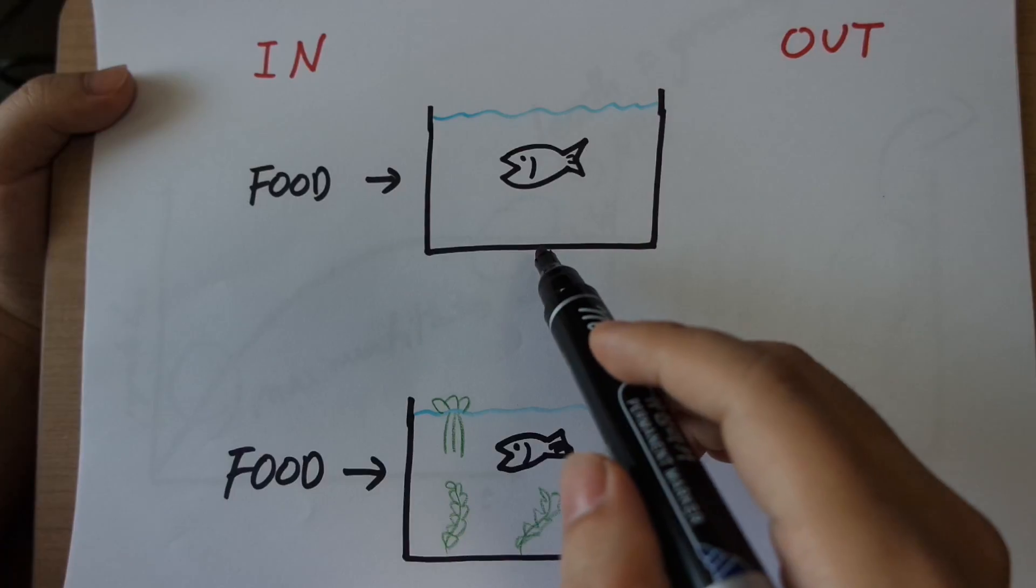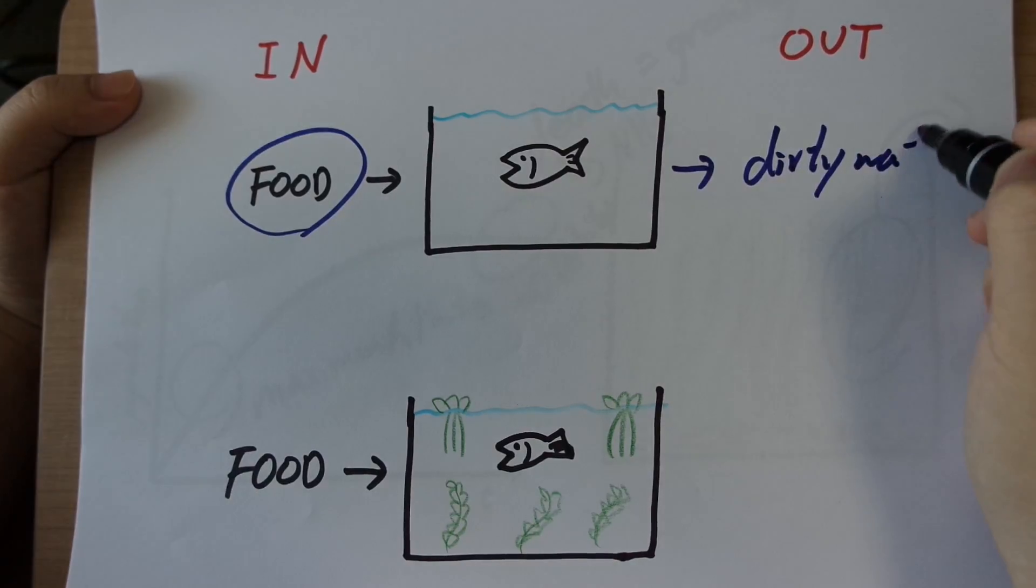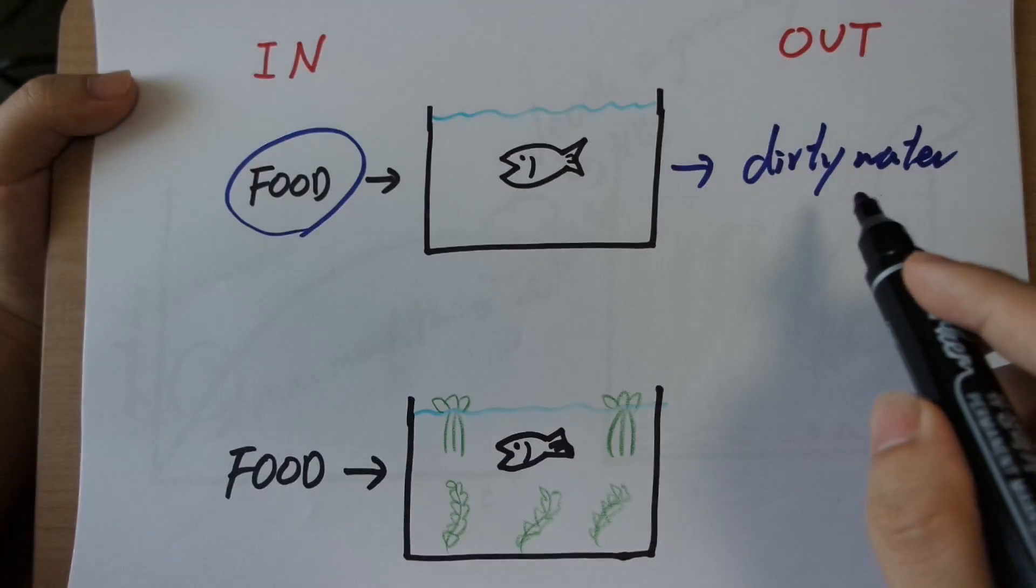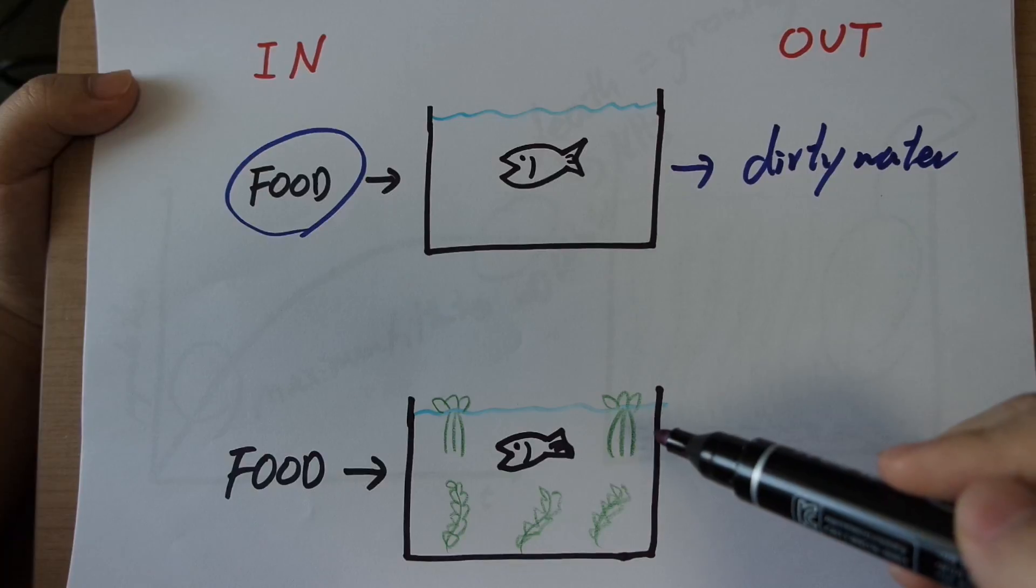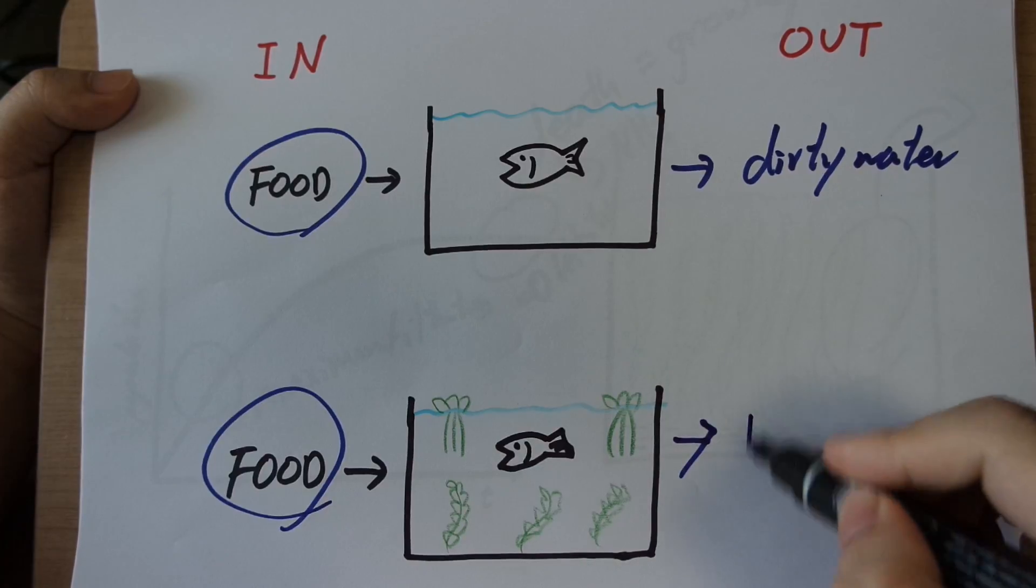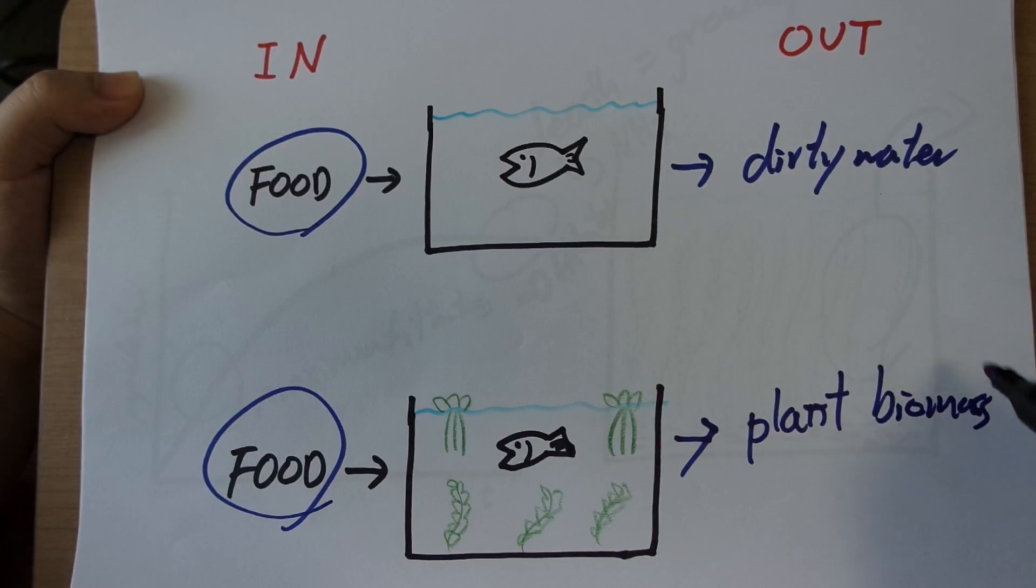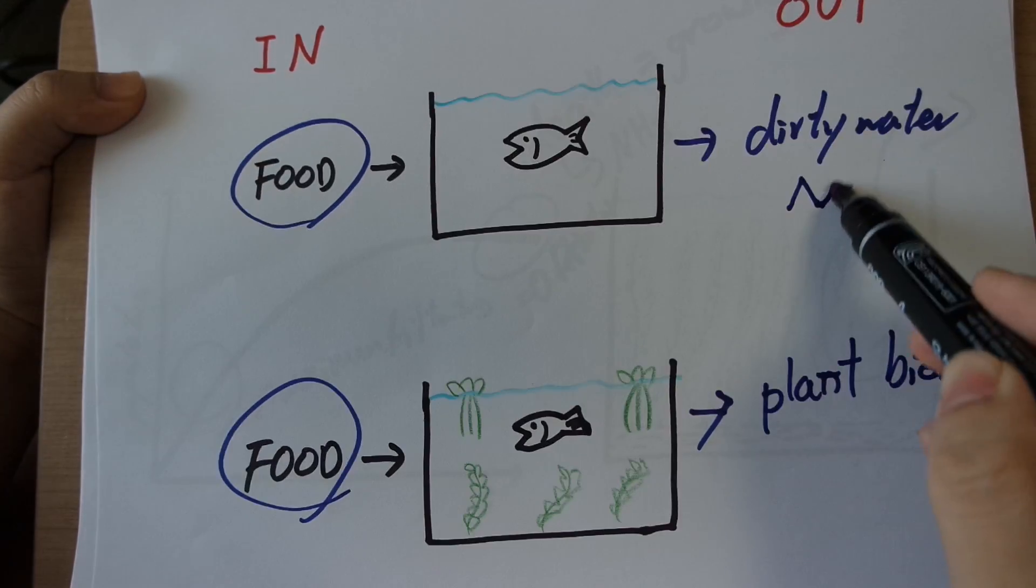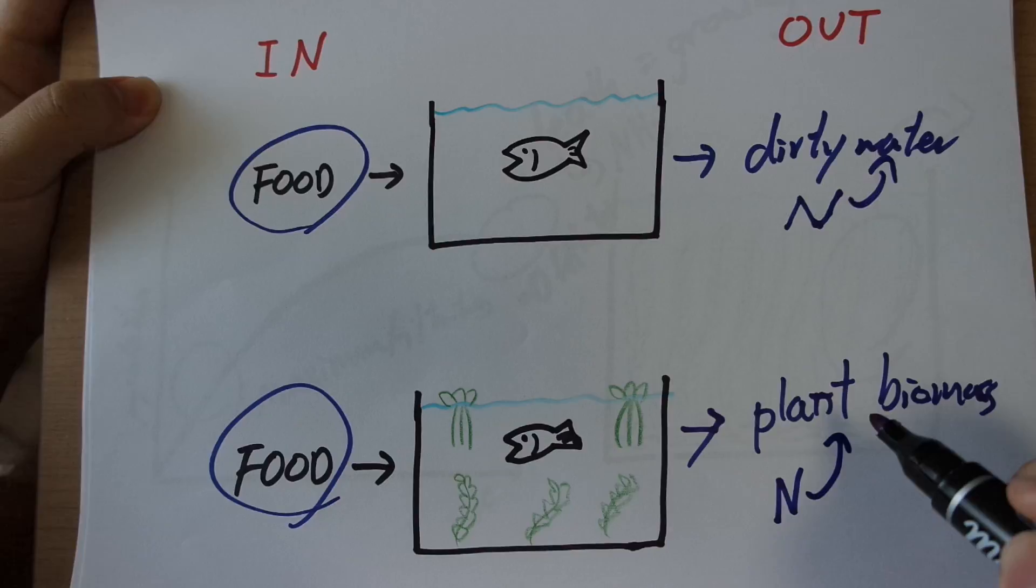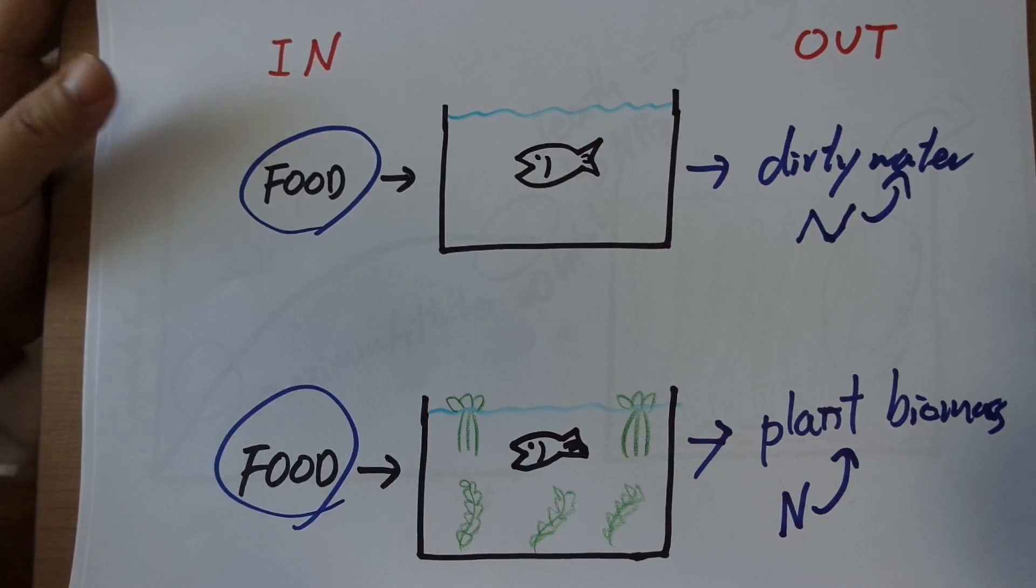So in conventional filtration, you have food going in and what comes out is dirty water. That is how conventional filtration works. You balance the input with the output that is the dirty water. In a planted tank, you have the same food going in, but instead of removing the dirty water, what you can do is remove the plant biomass. So instead of removing nitrogen by removing the water, you can remove nitrogen by removing the plant proteins from the water by just trimming the plants and cutting them off and keeping them growing. That is how plants work.